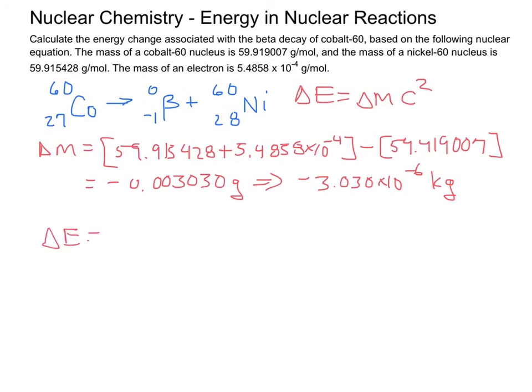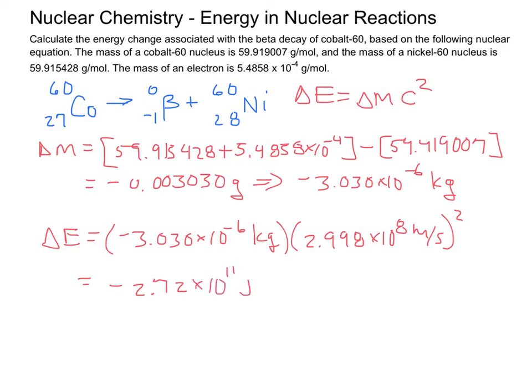Then delta E equals negative 3.030 times 10 to the negative 6 kilograms times 2.998 times 10 to the eighth meters per second. And, then you square that, and you should end up with negative 2.72 times 10 to the 11th joules.